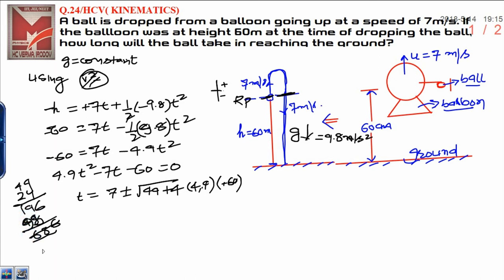It is 49 plus 1176 is 1225. Finally, divided by 2a. 2a is 4.9, which is 9.8.